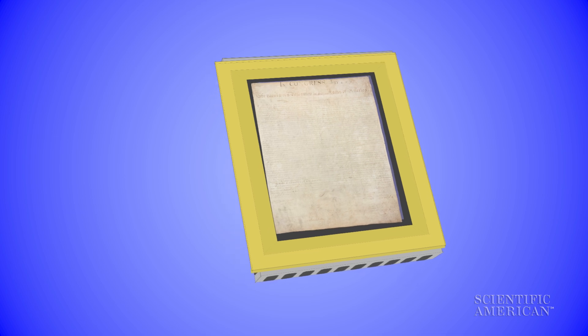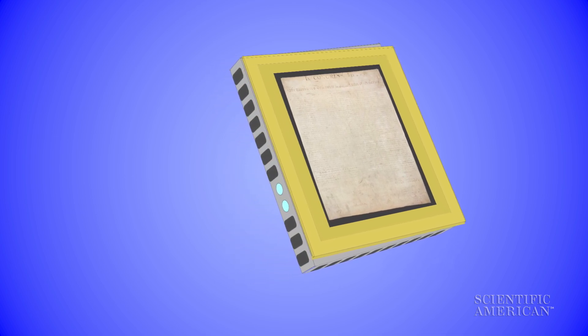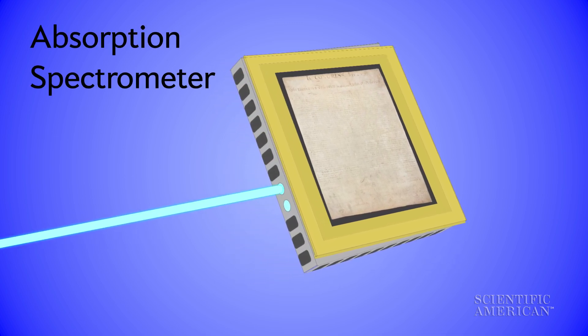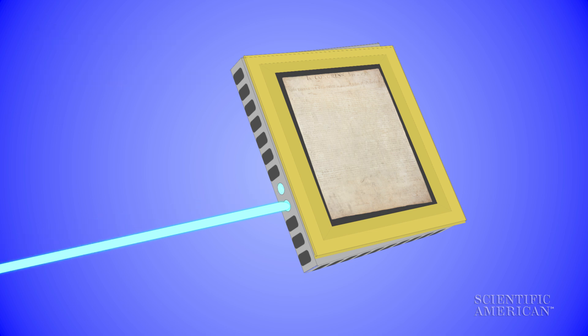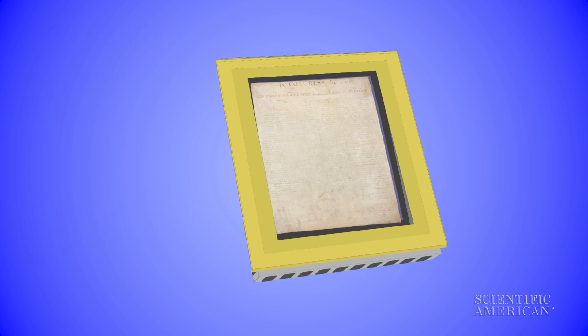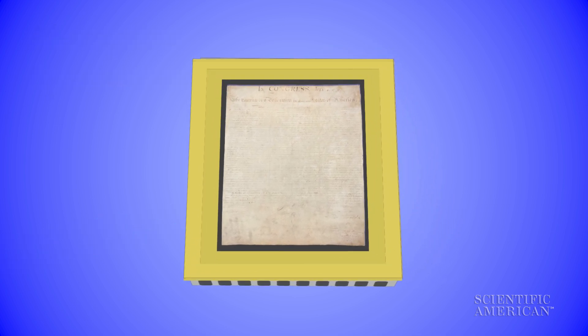To monitor the conditions inside the case, archivists use a tool called an absorption spectrometer. A beam of light shines into the case through a small sapphire window. It's reflected by a series of mirrors under the platform to a sensor behind another sapphire window.